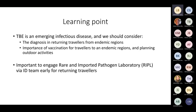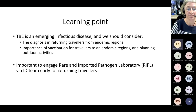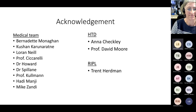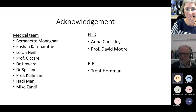The learning points are: TBE is an emerging infectious disease — consider it in returning travellers from endemic regions, but as its distribution changes, we must be aware of emerging regions too. The importance of vaccination is clear — had this patient been vaccinated as a routine traveller, he would have been spared these disabilities. Engage early with the Rare and Important Pathogen Laboratory via the ID team for returning travellers, as they have geographical panels that you may not be aware of. Thank you very much.